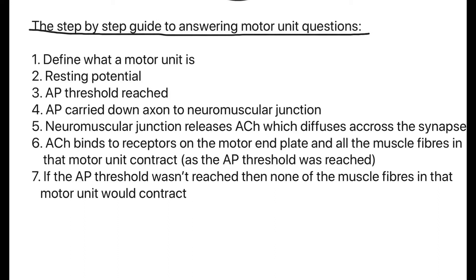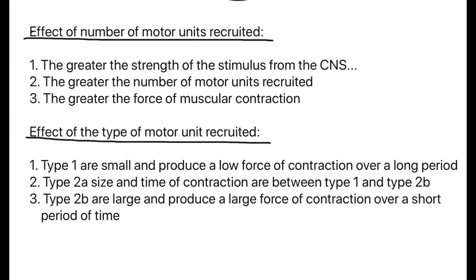Acetylcholine is shorthand ACh, but don't write it in the exam. Acetylcholine then diffuses across the synapse and binds to receptors on the motor end plates, and all the muscle fibres in that motor unit contract as the action potential threshold was reached. However, if the action potential threshold was not reached, then none of the muscle fibres in that motor unit will contract.